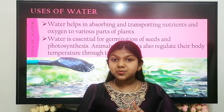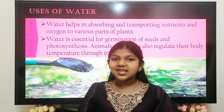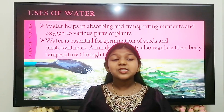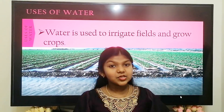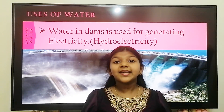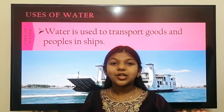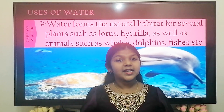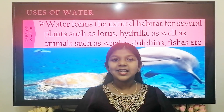Water helps in absorbing and transporting nutrients to various parts of the plants. Water is essential for germination and photosynthesis. Plants and animals also regulate their body temperature through transpiration. Water is used to irrigate fields and to grow crops. Water in dams is used for generating electricity. Water is used to transport goods and people in ships.